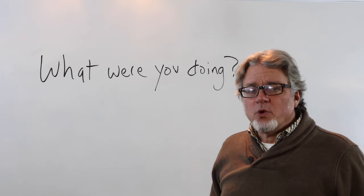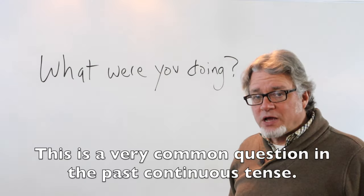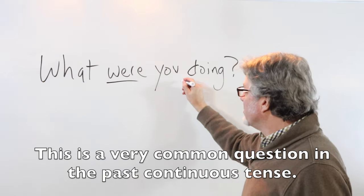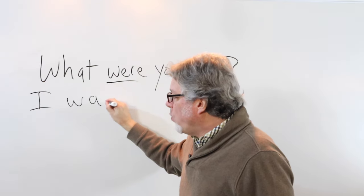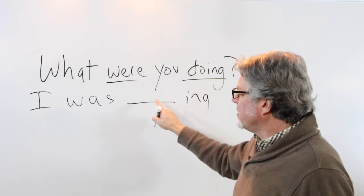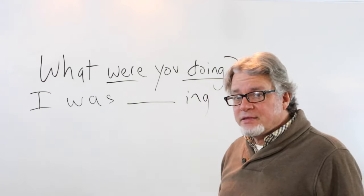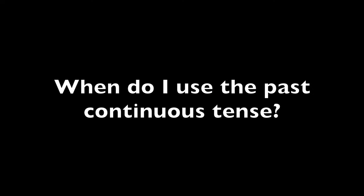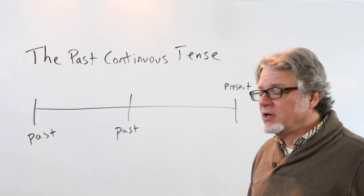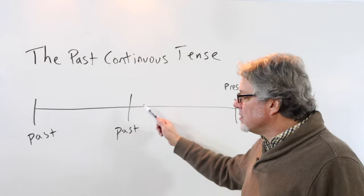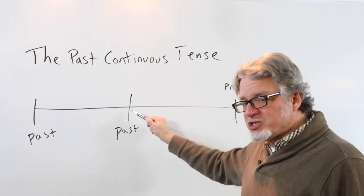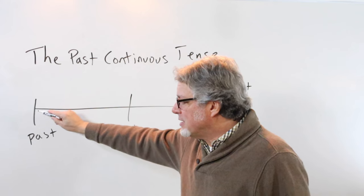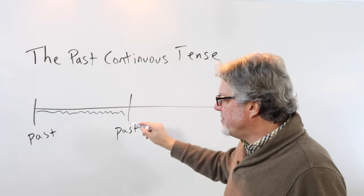"What were you doing?" is a very common question in the past continuous tense. Use the past continuous tense when talking about something that happened in the past — it started in the past, continued, and then finished in the past.